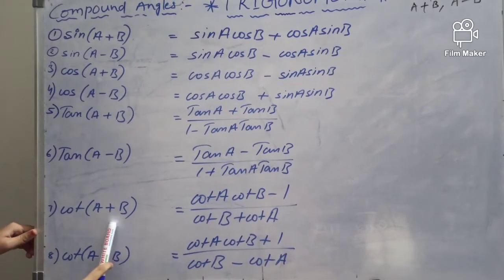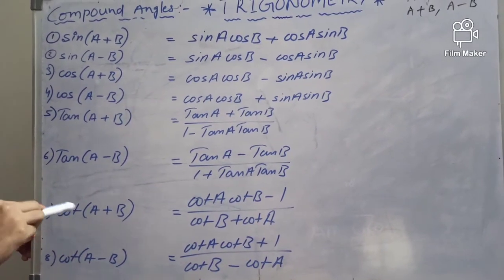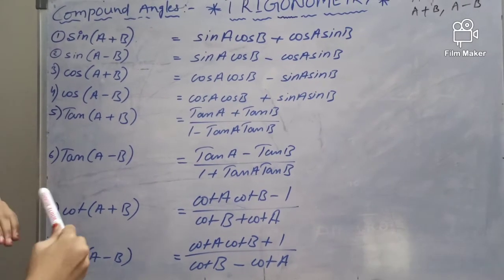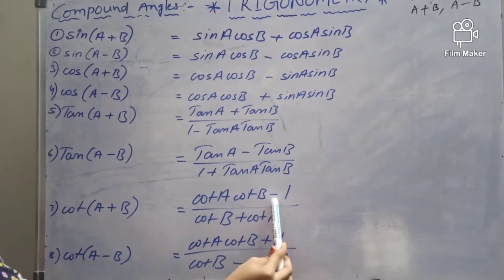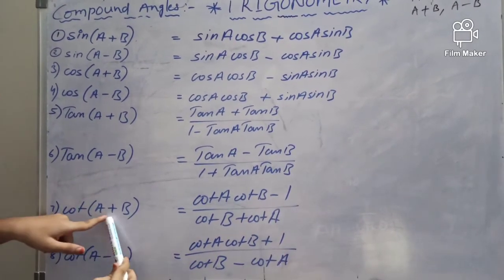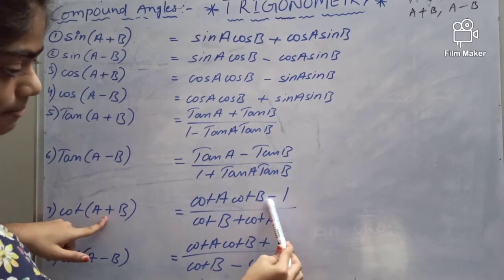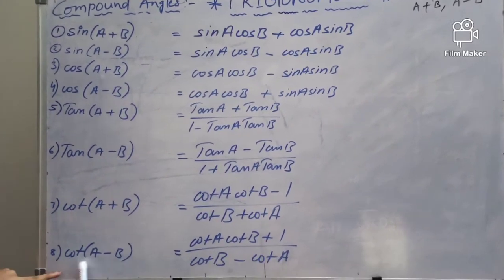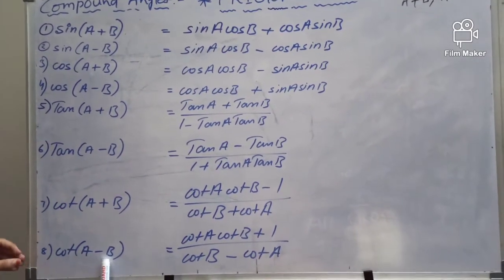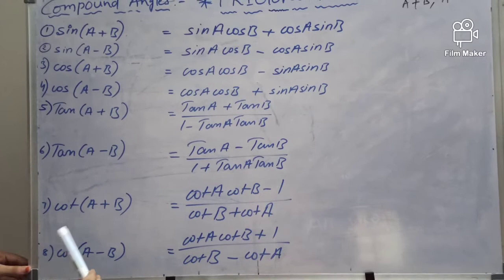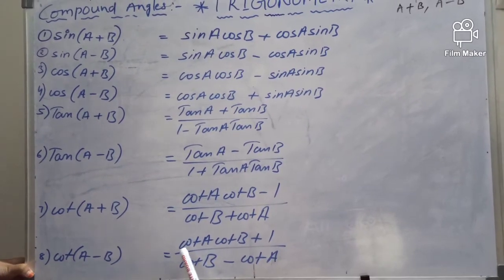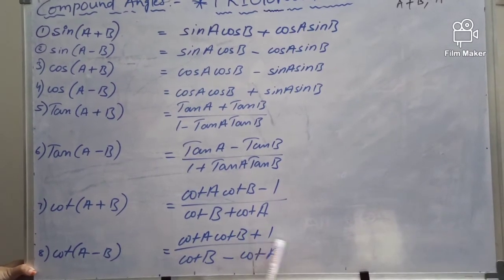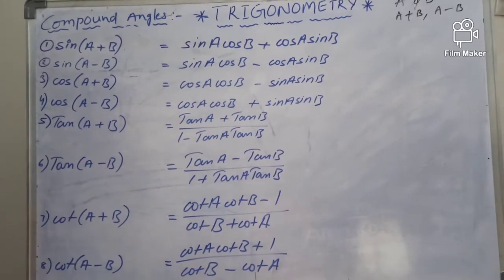Cot A plus B equals cos A plus B divided by sin A plus B. Here the signs change: the plus becomes minus in the numerator, and plus in the denominator. Cot A minus B: cos A minus B divided by sin A minus B equals cot A cot B plus 1 divided by cot B minus cot A.